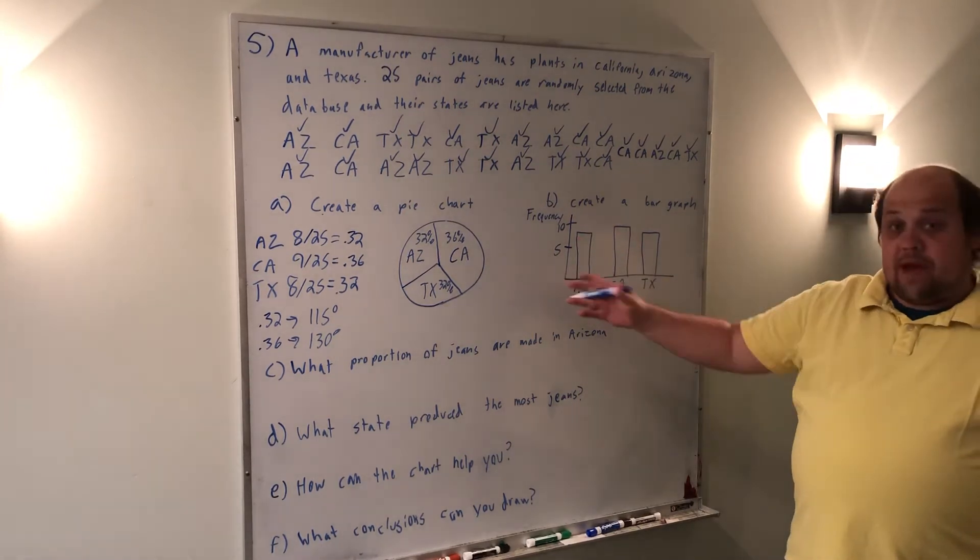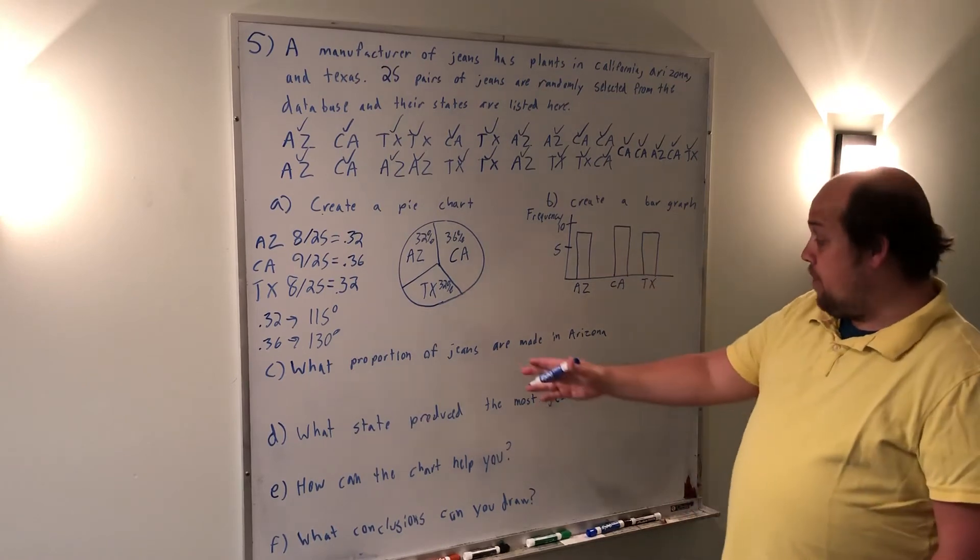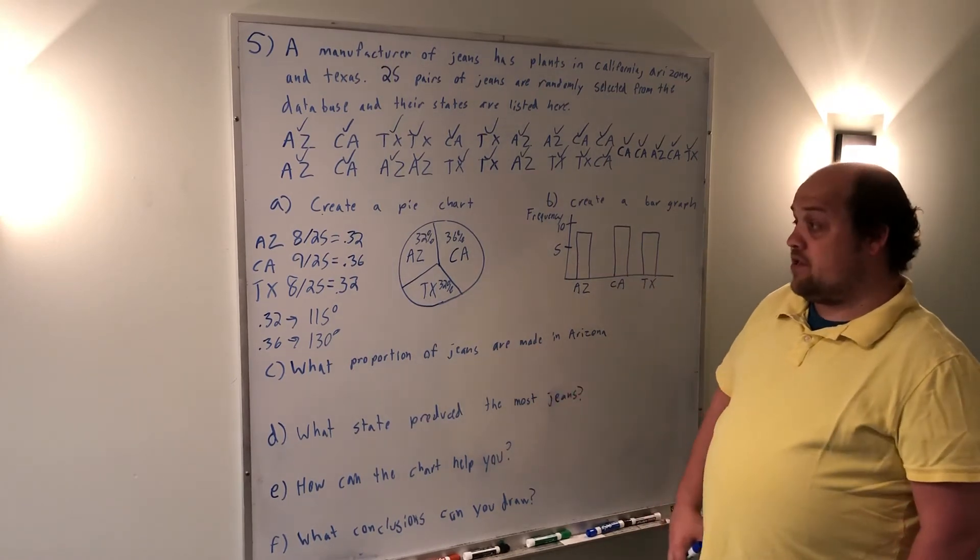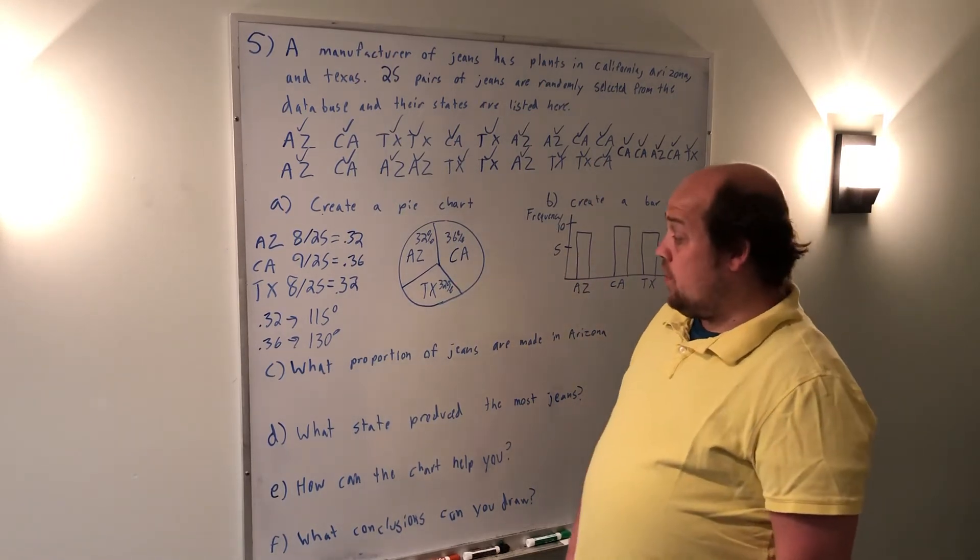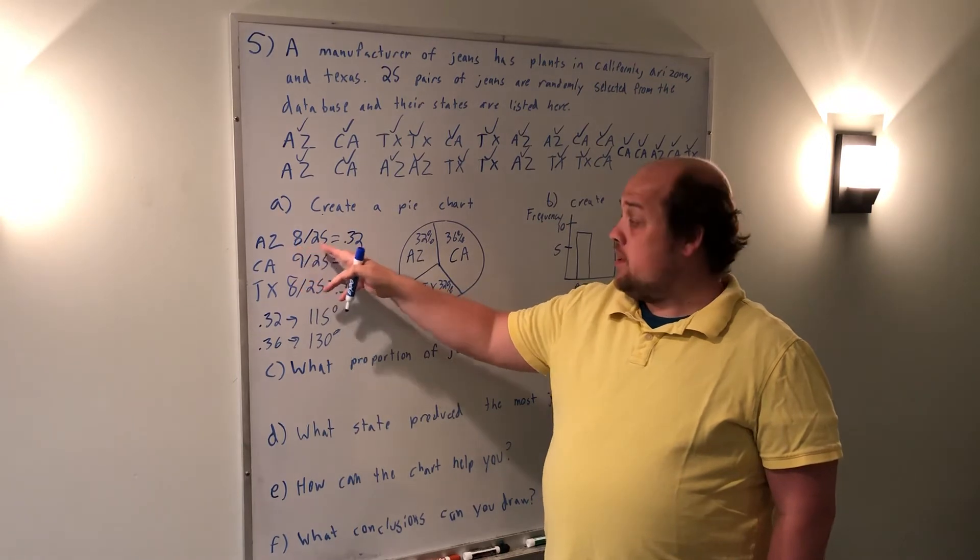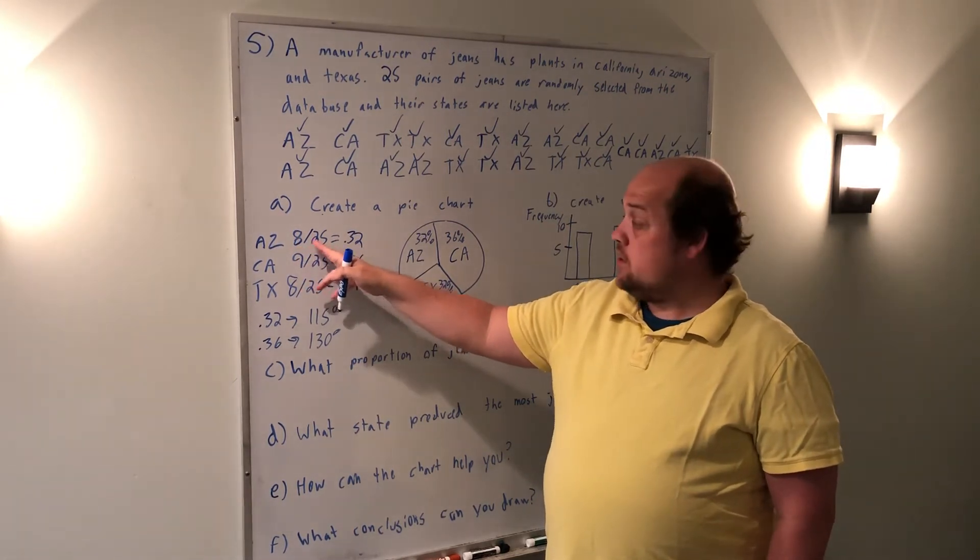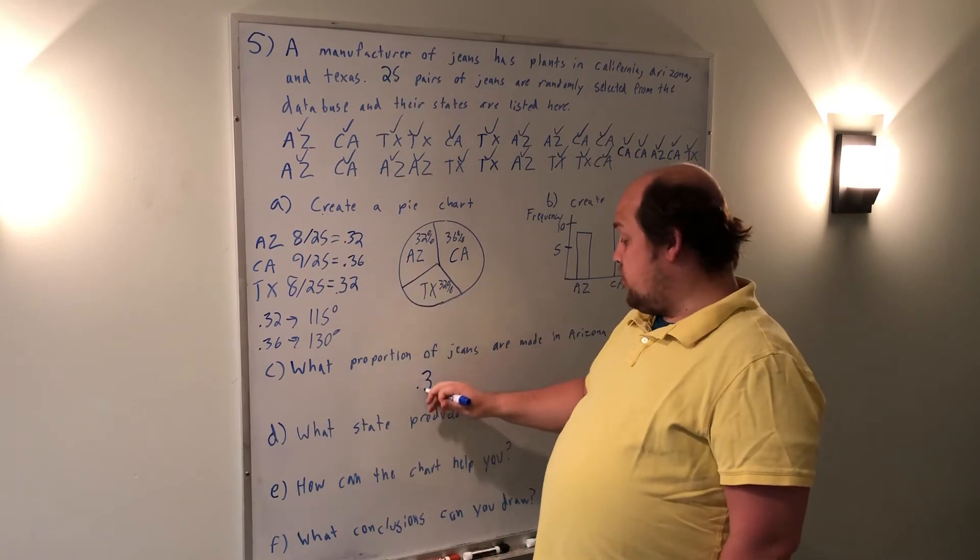So I've now created my pie chart. I've created my bar graph. I have some questions from it. What proportion of the jeans are made in Arizona? I actually already did that when I wanted to figure out what the central angle would be. The proportion is the total that fit in the group divided by the total number. So 8 of them were from Arizona out of the 25. That gave me a proportion of 0.32.